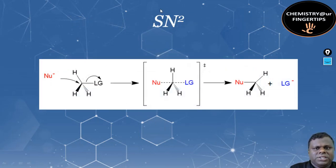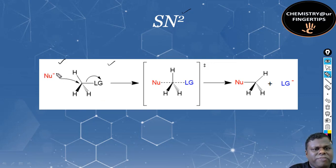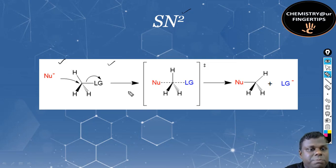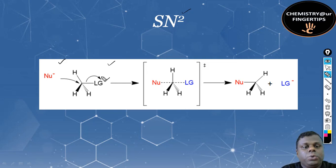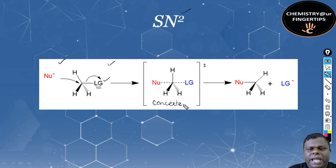Now let's talk about the SN2 reaction. This is a bimolecular, second-order reaction. The nucleophile attacks from behind — the side opposite to the leaving group. Why? Because the leaving group has a negative charge (say Br⁻), and if the nucleophile also has a negative charge, there is repulsion, so a front-side approach is not possible. Therefore, the nucleophile attacks from the back.